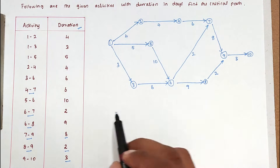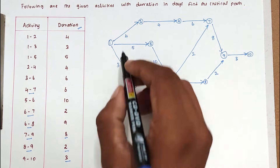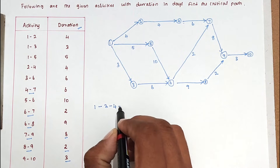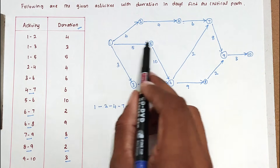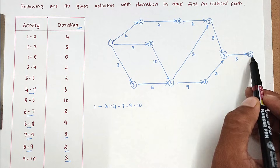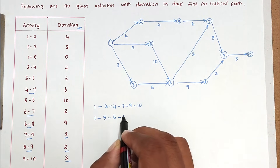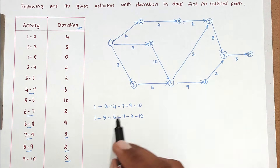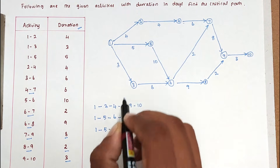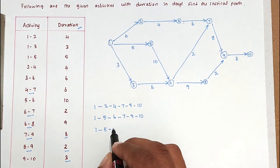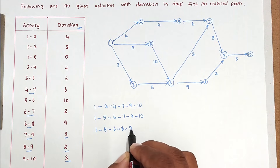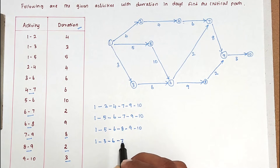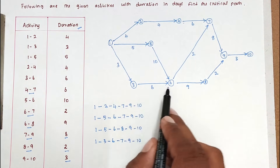Now we can find the different paths through the network. Path 1: 1-2-4-7-9-10. Path 2: 1-5-6-7-9-10. Path 3: 1-3-6-7-9-10. Path 4: 1-5-6-8-9-10. Path 5: 1-3-6-8-9-10. There are five paths in total.